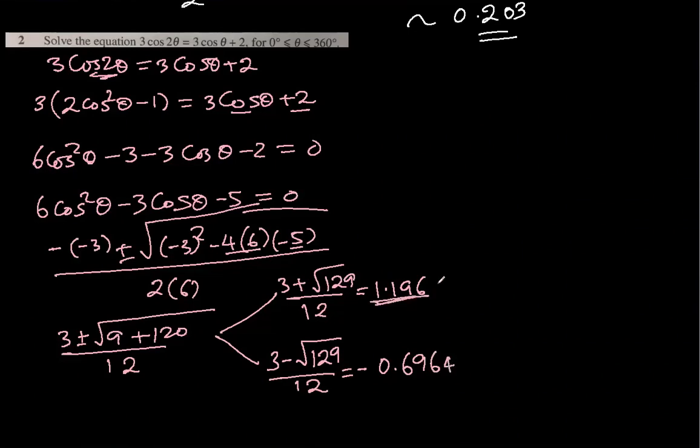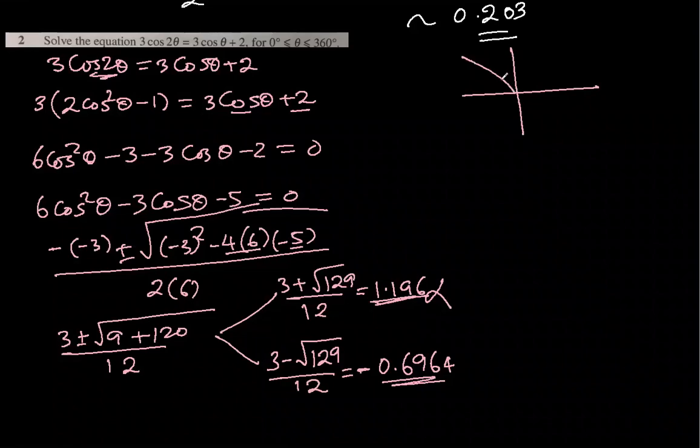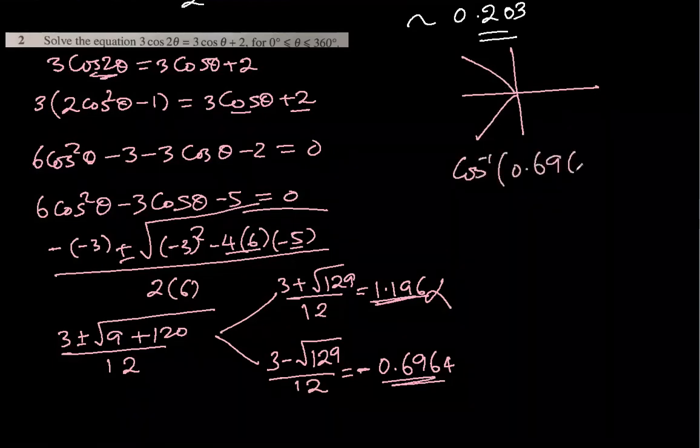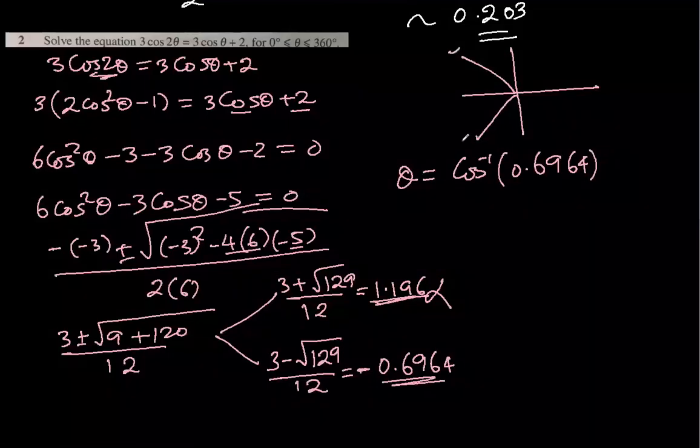We know that cos θ cannot be more than 1, so this one is rejected. It is a negative value of cos, and between 0 and 360, these are the quadrants where cos is negative. So let's find cos inverse 0.6964. If you notice, I have ignored negative because negative has given us quadrants. If I put negative here, I will not get an answer I want. I want an acute angle. When I use my calculator, I get approximately 45.9.